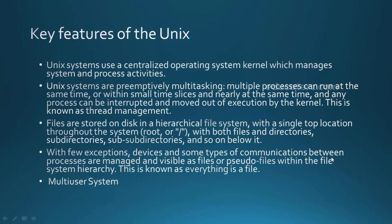Coming to the features of UNIX, we will discuss many important features here. UNIX has a centralized operating system called the kernel — the heart of the UNIX operating system — which manages all system resources, activities, and processes. UNIX belongs to the multitasking and multi-user family, so a user can perform any number of operations at any particular interval of time. We can also interrupt a process, start a process at any time, or schedule a process to start at a specific point — all known as thread management.